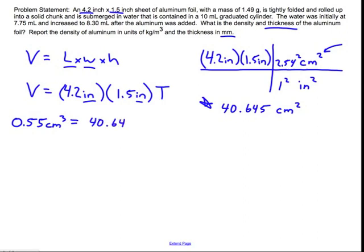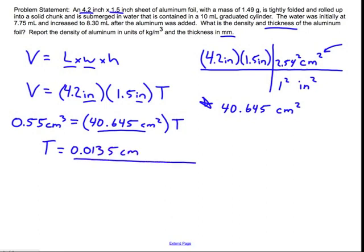40.645 centimeters squared times T. Divide this quantity over to the other side so I can isolate for T. And I find that T is equal to 0.0135 centimeters. The problem asks for me to solve this out in millimeters. So I want to get rid of centimeter. I want to go to millimeter. There are 10 millimeters in one centimeter.